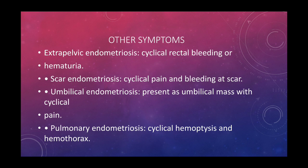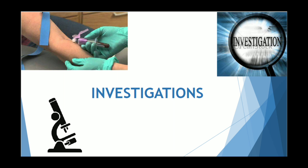Other symptoms include extra-pelvic endometriosis such as cyclical rectal bleeding or haematuria. Scar endometriosis presents with cyclical pain and bleeding at the scar. Umbilical endometriosis presents as an umbilical mass with cyclical pain. Pulmonary endometriosis can also occur, causing cyclical haemoptysis and haemothorax.